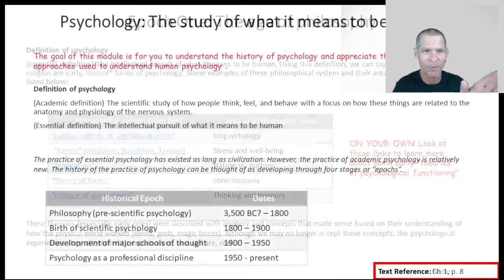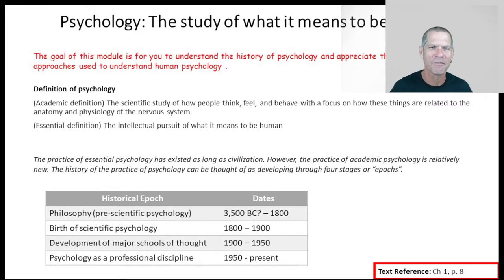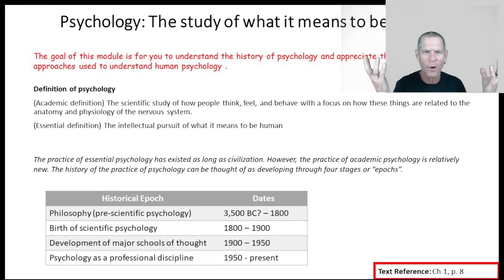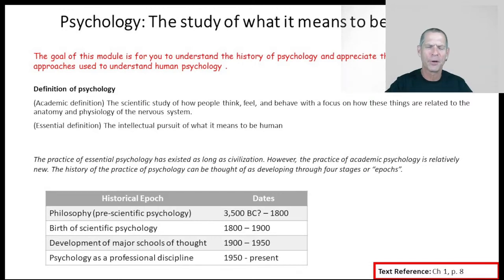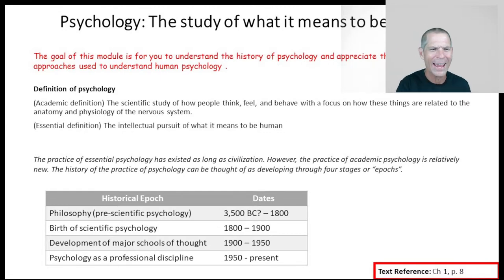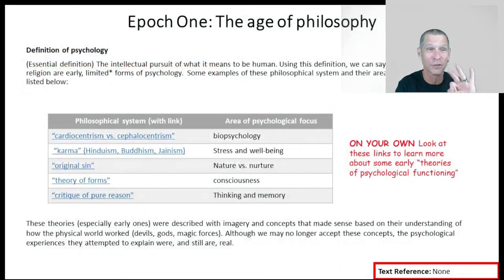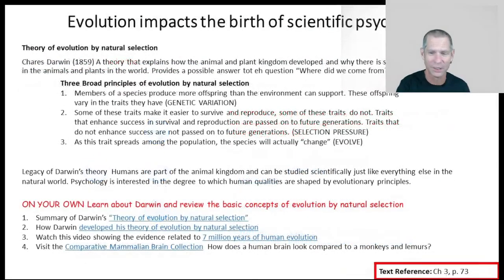What we moved from — going all the way back to slide one — is a pre-scientific period of psychology where people thought about what it meant to be human, to this period of psychology where we turned it from a philosophy into a science. So that's the first two epochs of psychology.